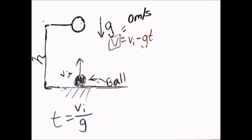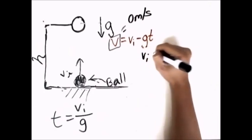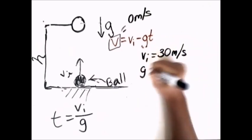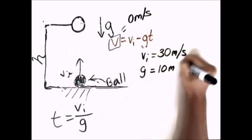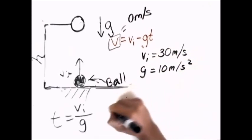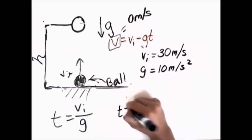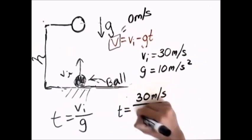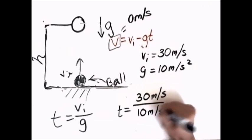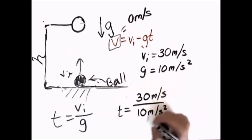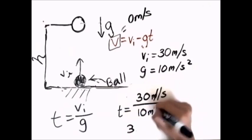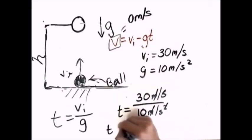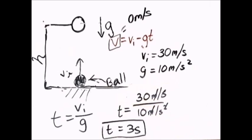Going back to our variables: initial velocity is 30 meters per second and acceleration is 10 meters per second squared. Plugging into our formula: time equals 30 m/s divided by 10 m/s², which simplifies to t equals 3 seconds.